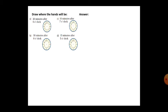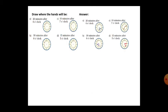Draw the minute hand: 20 minutes after o'clock. Then draw the minute hand 30 minutes after eight o'clock. The time is eight. You have to draw the hour hand — the small hand — and the long minute hand. Count: 5, 10, 15, 20, 25, 30.